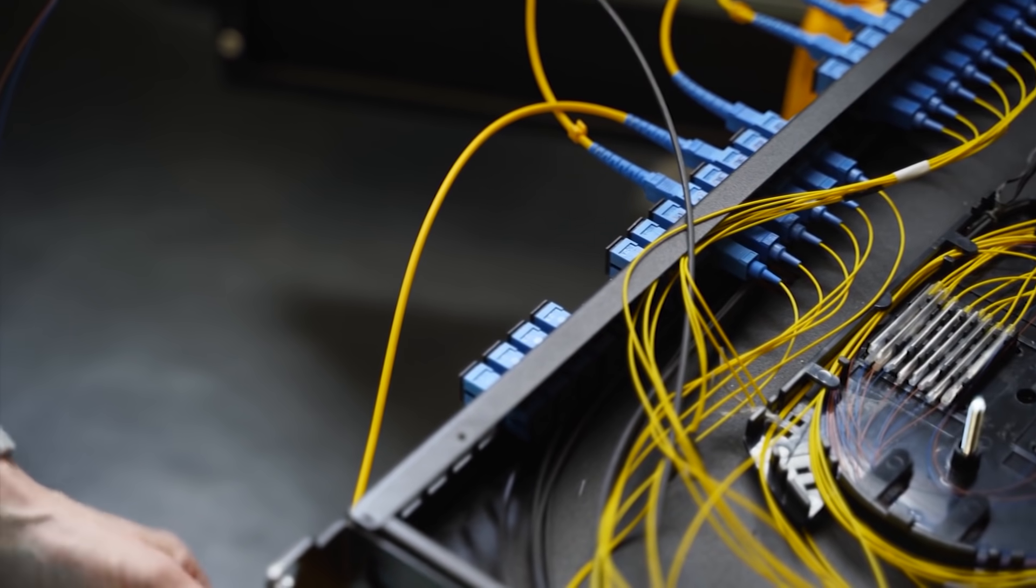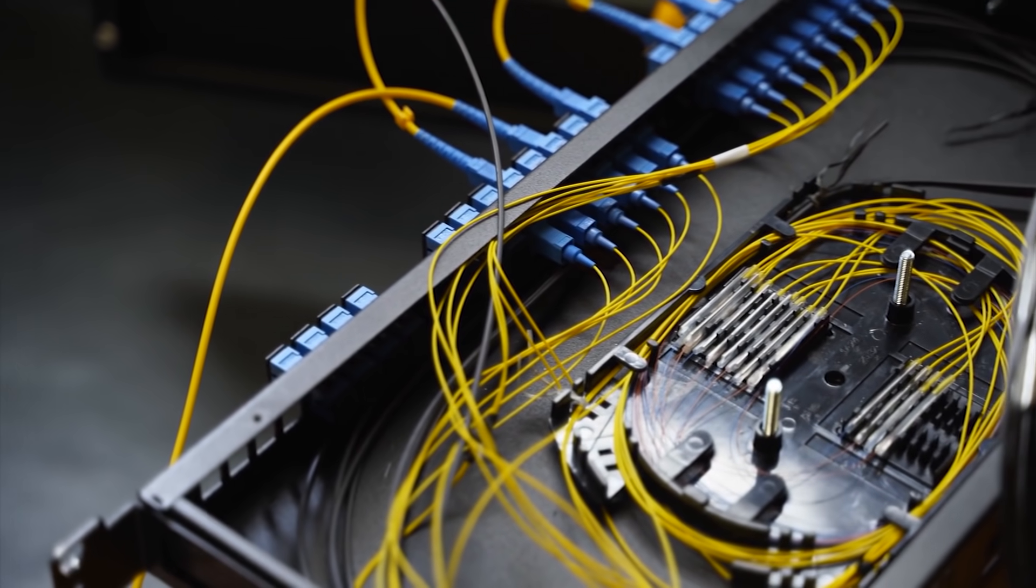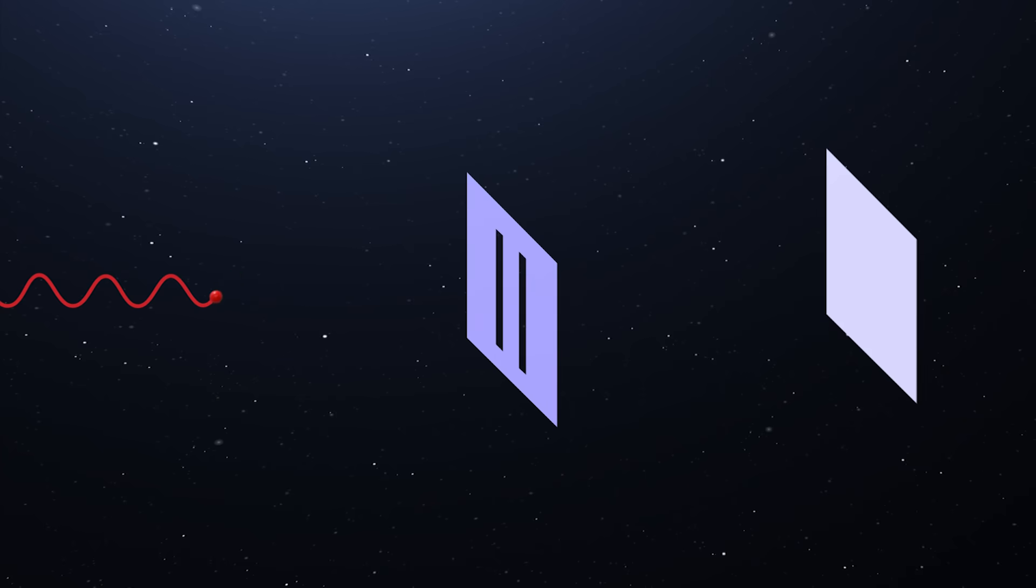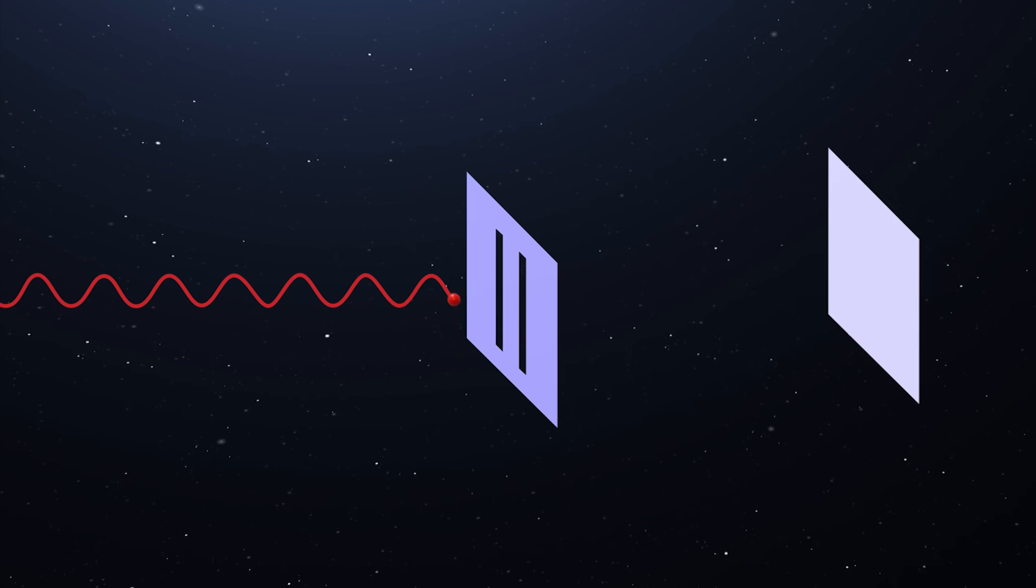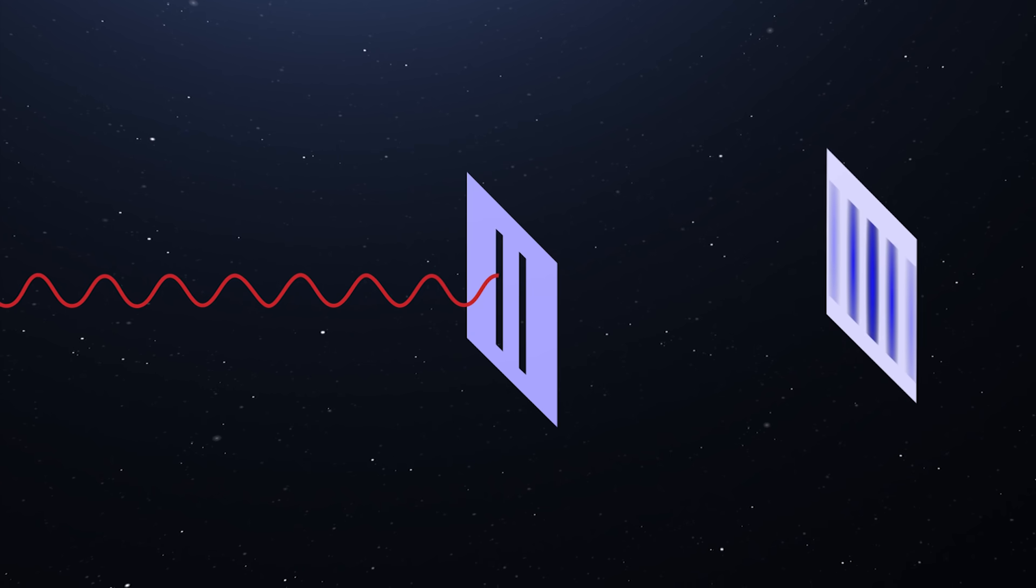But here's where it gets more bizarre. Just by observing the double slit experiment, the behavior of the photon changes. Even if the photons are sent through the slits one at a time, there is still a wave present that produces the interference pattern.